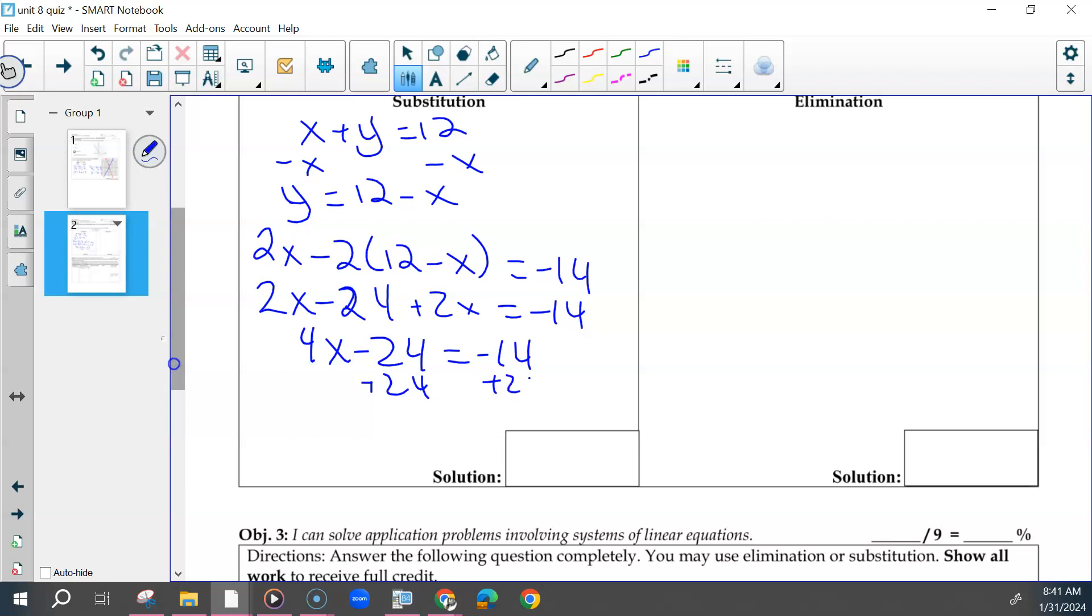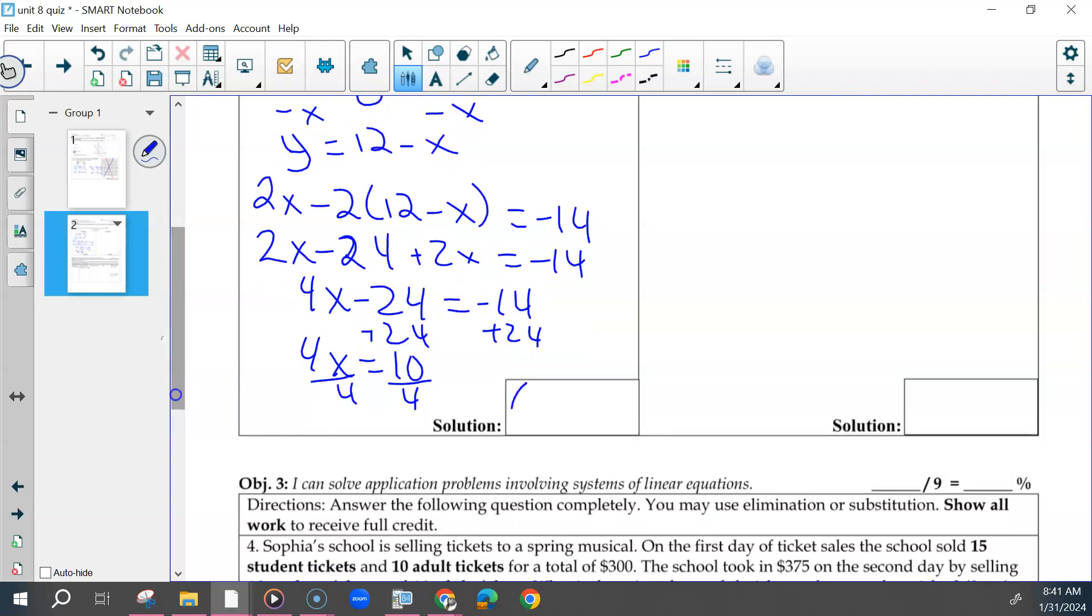Add 24 to both sides, so that x was 2.5 or 5 halves. It did not matter whether you wanted to use fraction or decimal.